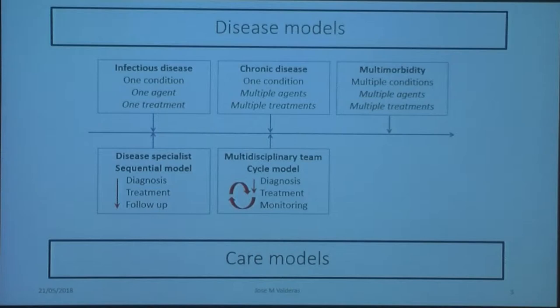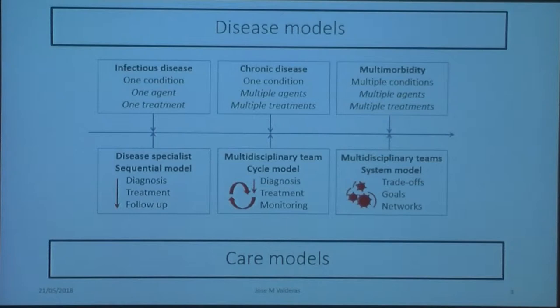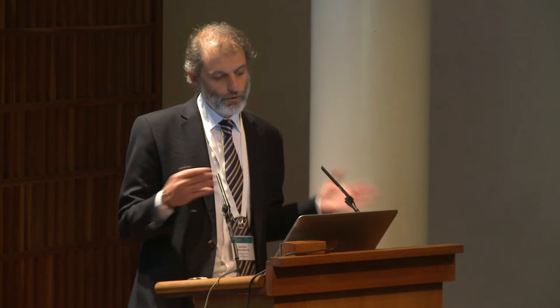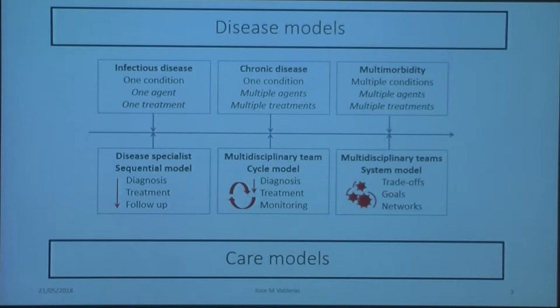Now, the problem with multimorbidity, which I would argue to some degree begs for a paradigm change in how we conceive medicine, is that we have multiple conditions, multiple agents, and multiple treatments. And we also need to come up with a specific approach to this challenge. It's more about a system model that supersedes the previous one, where we recognize that there are trade-offs, that the goals cannot be just to maximize everything, because you cannot maximize all these many things simultaneously. Some of them will be made at the cost of others, and in order to make those trade-offs, they need to be explicit. That begs for the identification of goals, which so far tended to be rather implicit. And also in the ways of operating, we increasingly need to develop more sophisticated ways of working across networks of professionals.